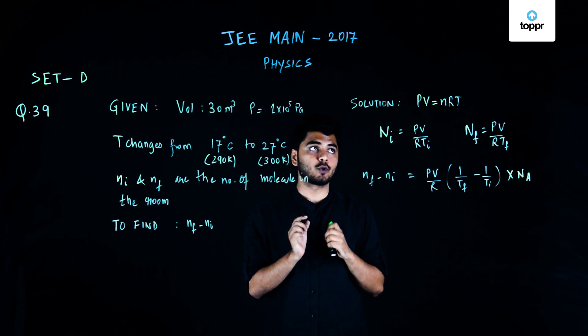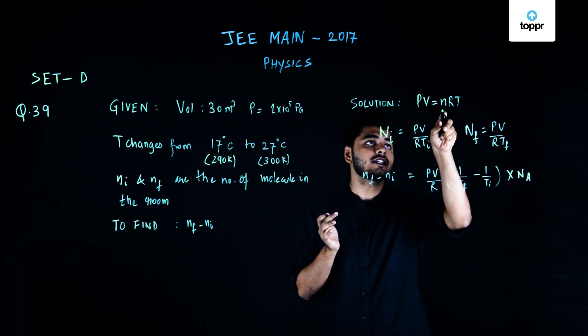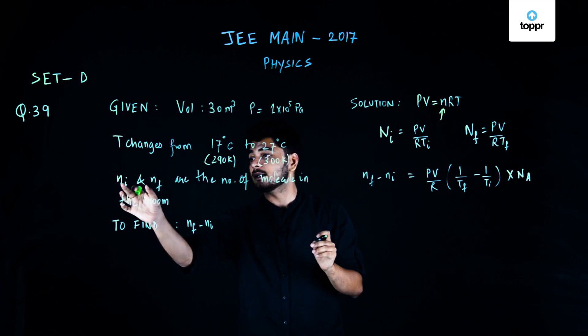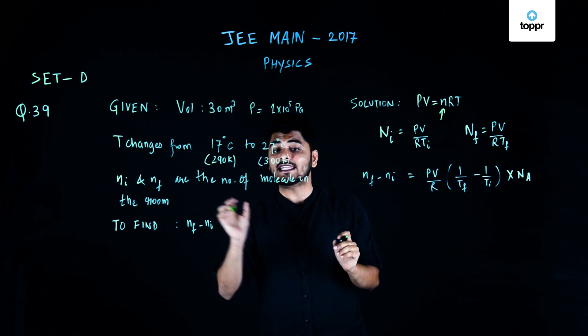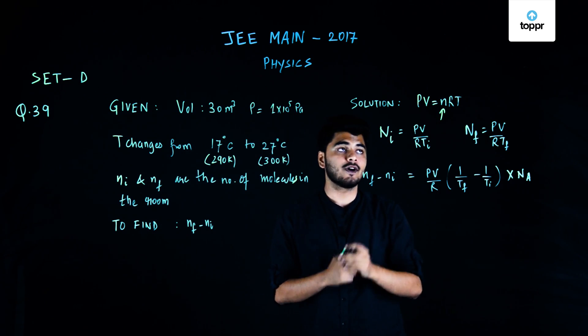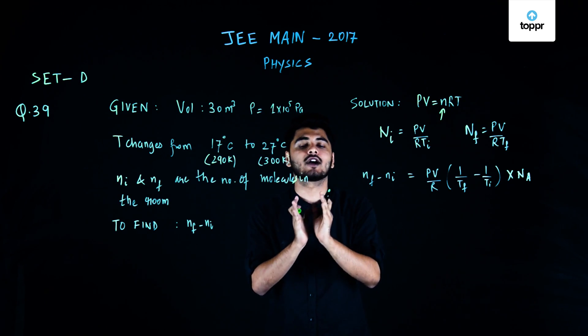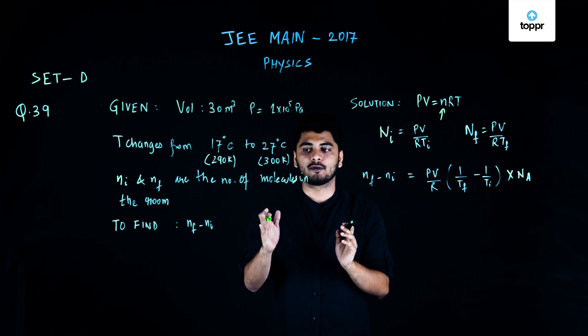One very critical thing to note over here is that the n represents the number of moles while we have been asked to find the difference between the number of molecules in the room. So, first we need to find the number of moles and later on we'll just multiply with Avogadro's constant and we get the number of molecules.